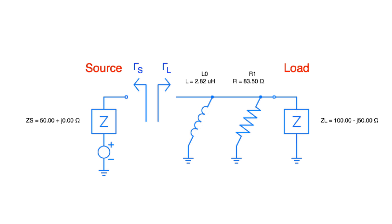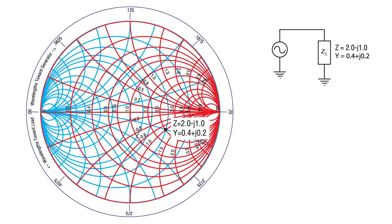So by adding a parallel resistor and inductor, we have converted a standing wave ratio of 2.62 to a standing wave ratio of 1.0. However, this may not be the best solution because it involves a resistive element that will dissipate some of the RF energy before it gets to the load. So let's look again to see if there is a solution that uses only capacitors and inductors — ideal components that don't dissipate any power.